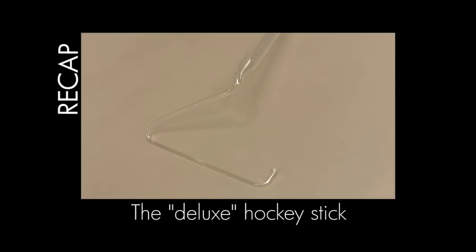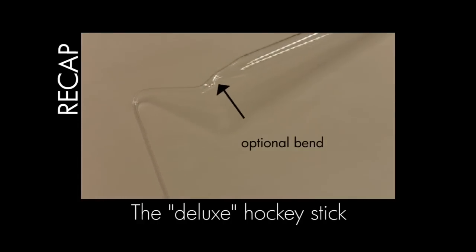To make the ergonomic deluxe hockey stick, which looks nothing like a hockey stick, you make three bends here, here, and here, as well as the sealed tip. You can raise it up off the table with one more bend at the top of the triangle. That's how you make a hockey stick, and we'll see you next time.